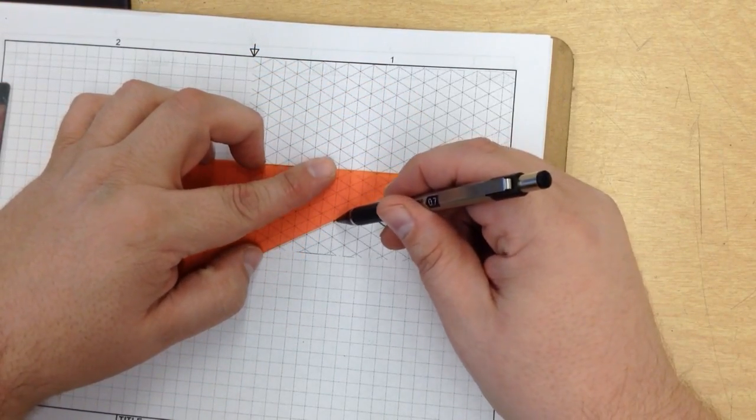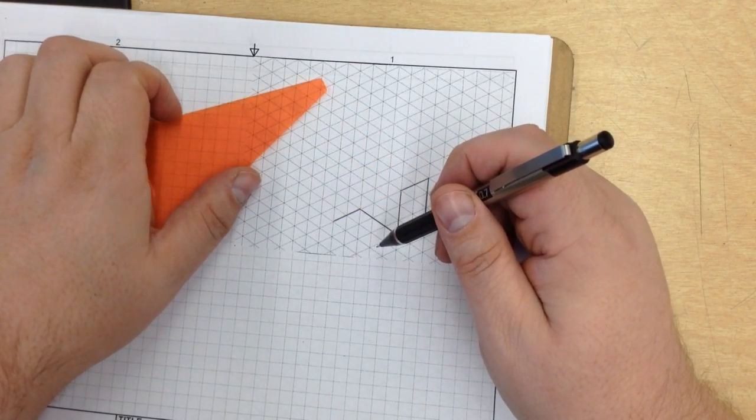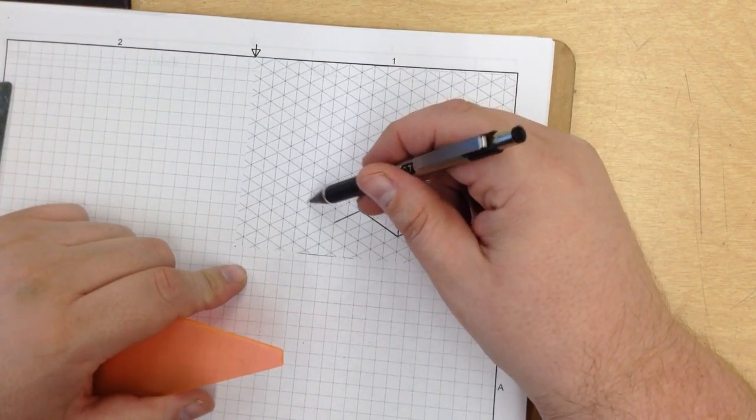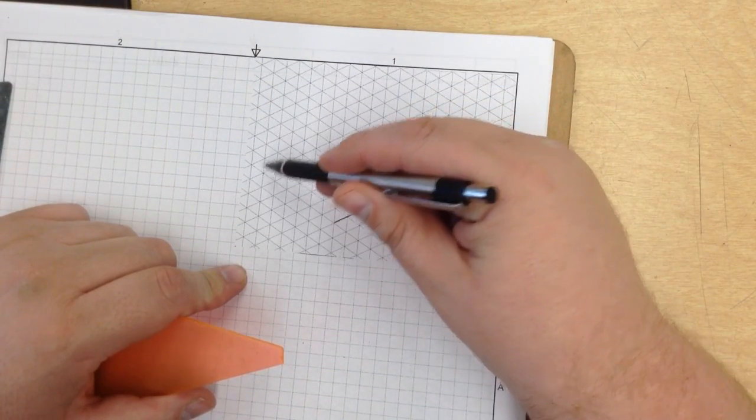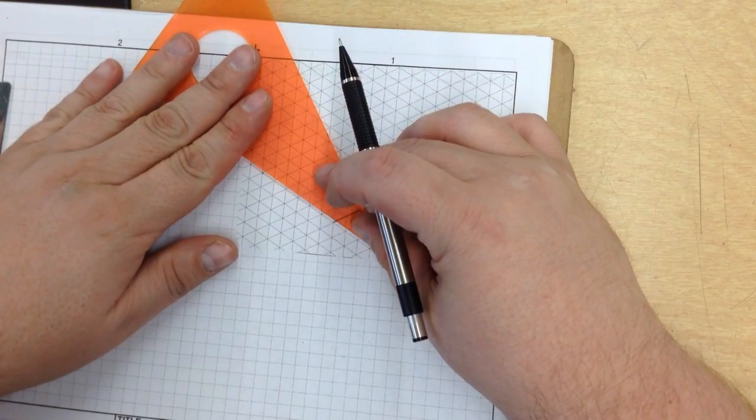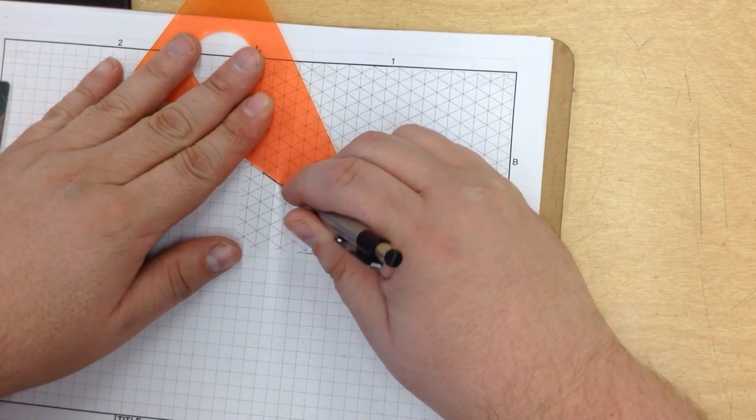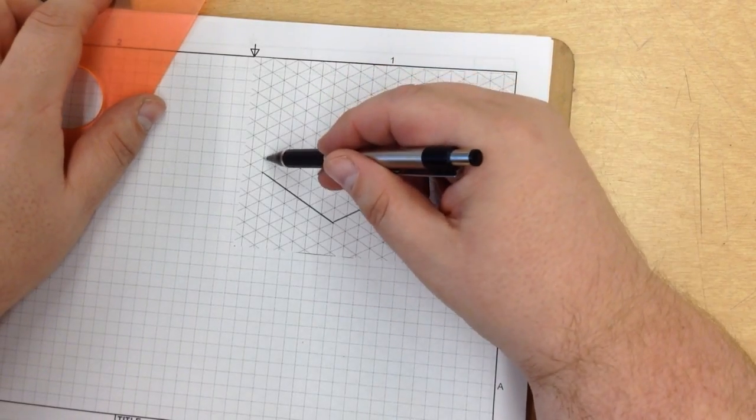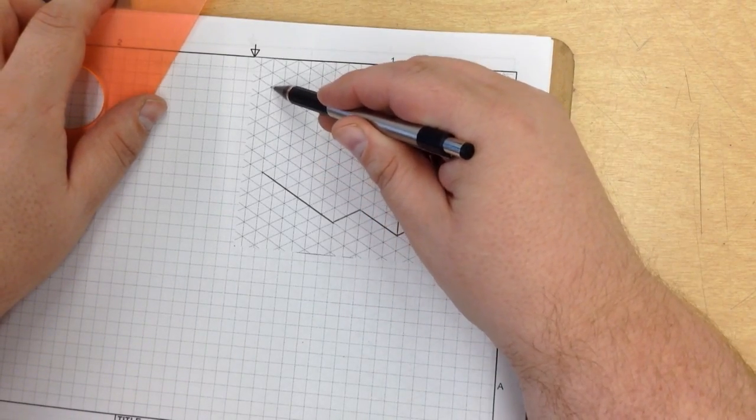Let's see, 1, 2, 3, 4, 5, 6. Just like so. And then 1, 2, 3, 4, 5, 6 up, 1, 2, 3, 4, 5, 6.